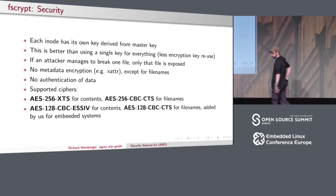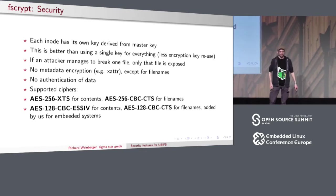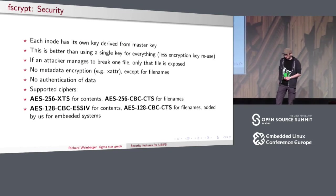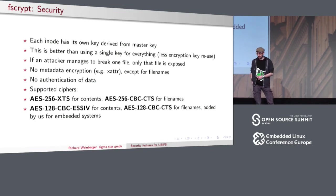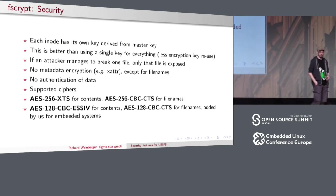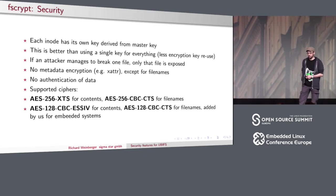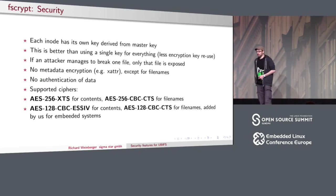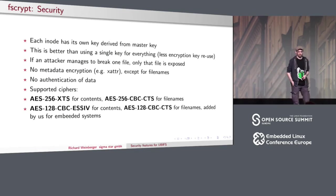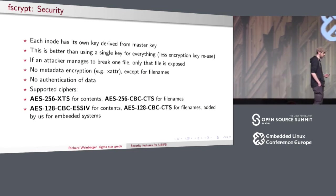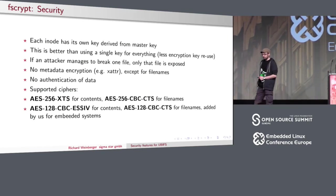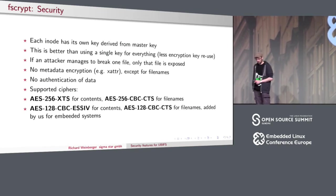By default, FSCrypt supported AES-256 in XTS mode for file contents and CBC mode for file names. This works fine for the Google use case but not for my embedded use case, because on small low-powered devices, AES-XTS has to be done in software and is really slow. So we added a new mode — AES-128-CBC — because this can be offloaded to most hardware crypto accelerators found on embedded devices, such as Freescale platforms, making encryption reasonably fast. I hope support for more cipher modes will come soon.